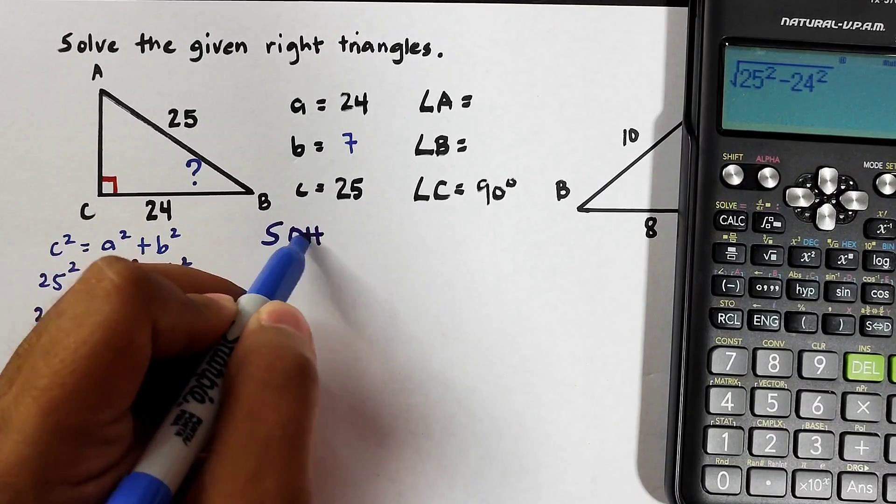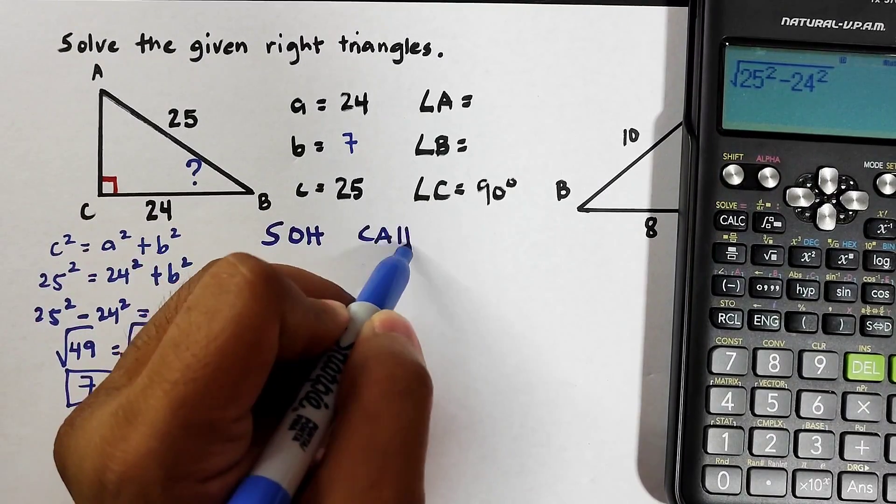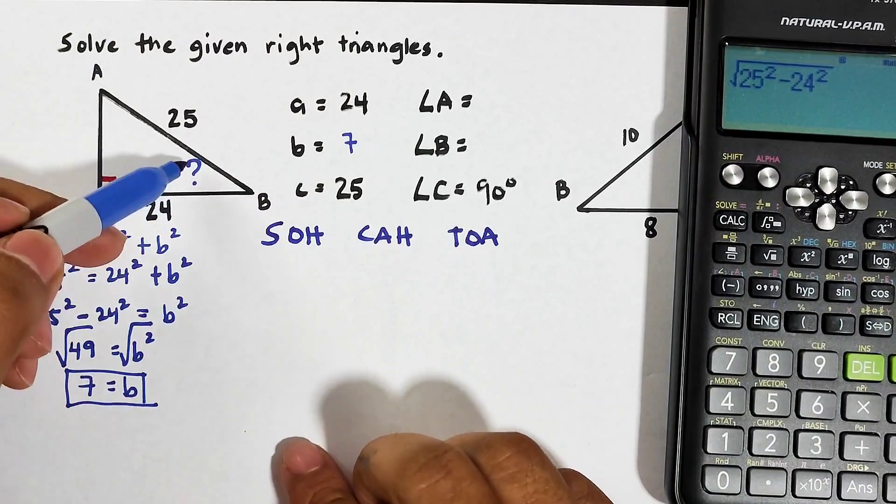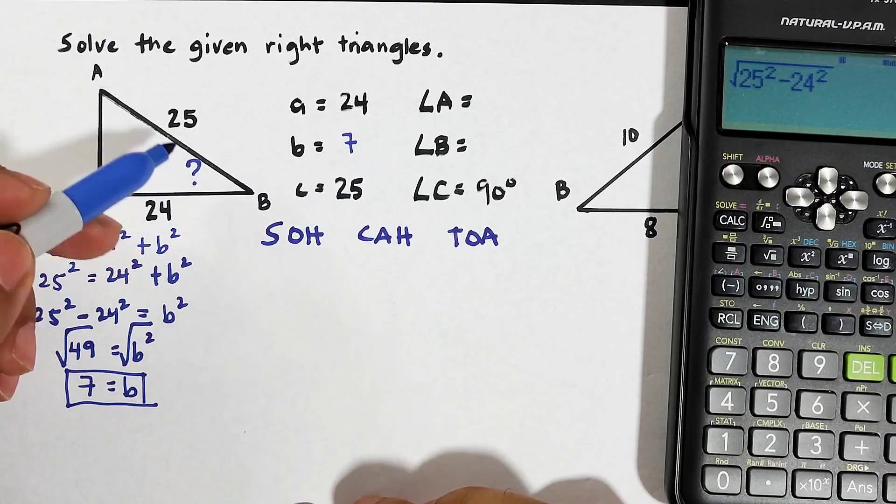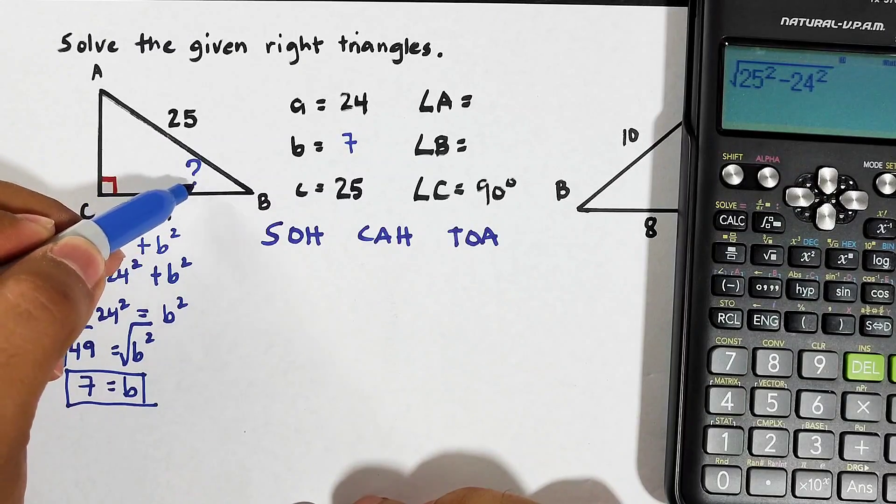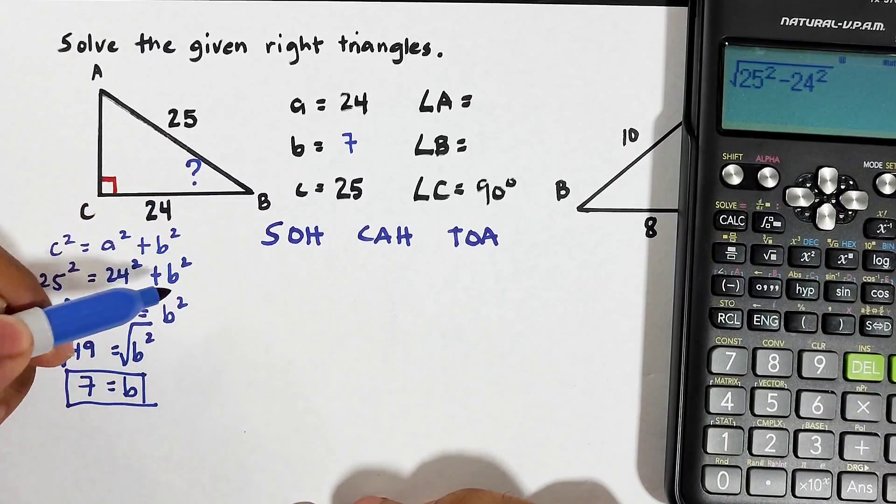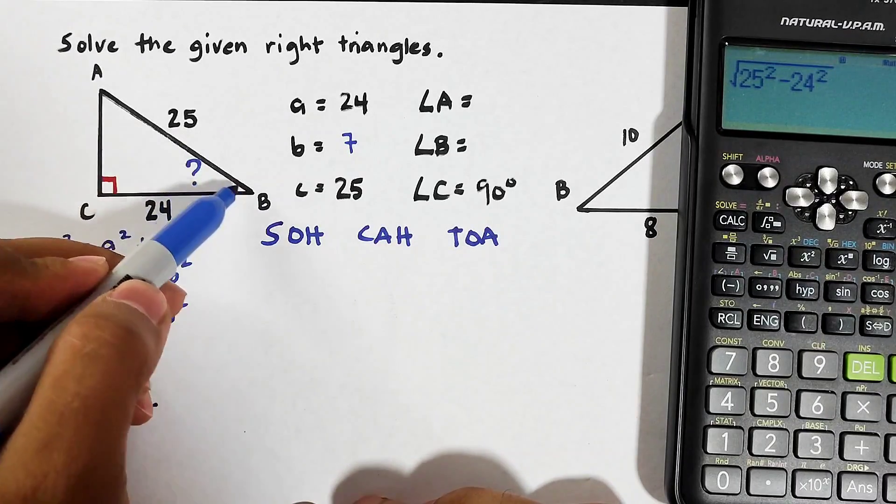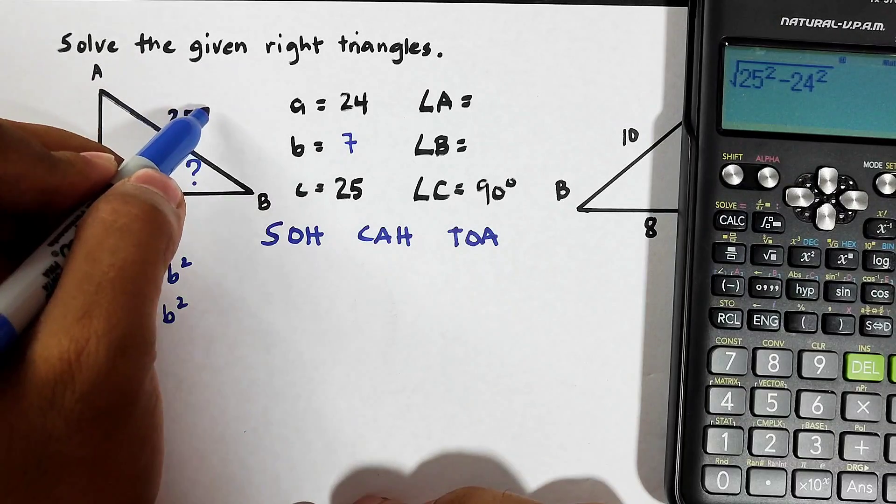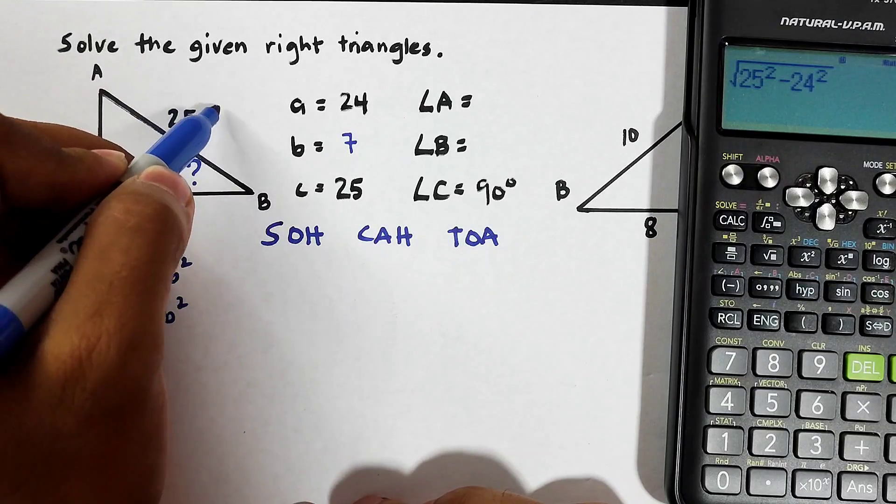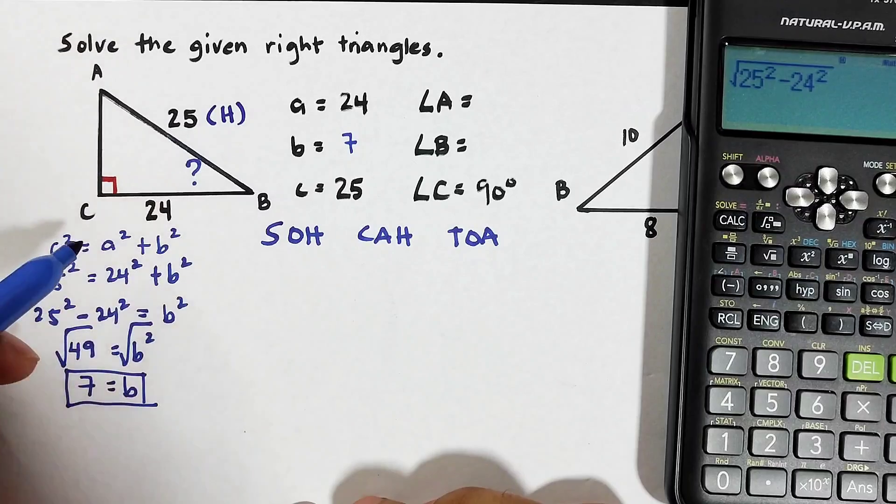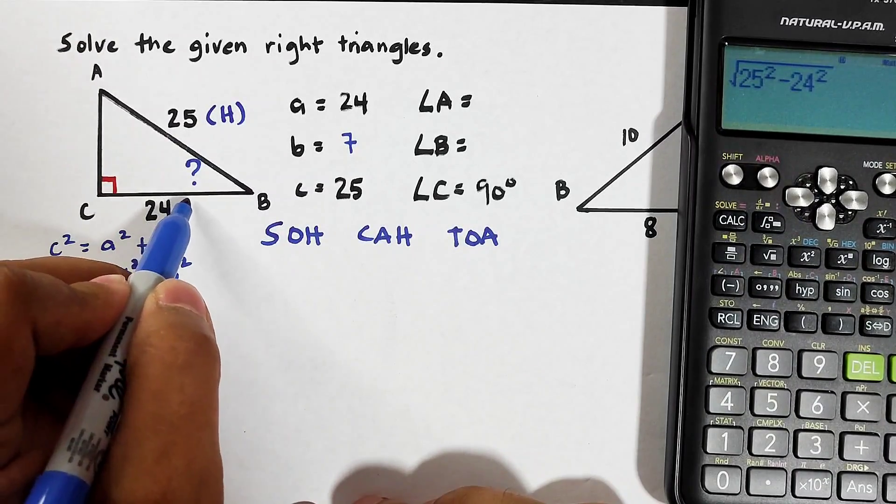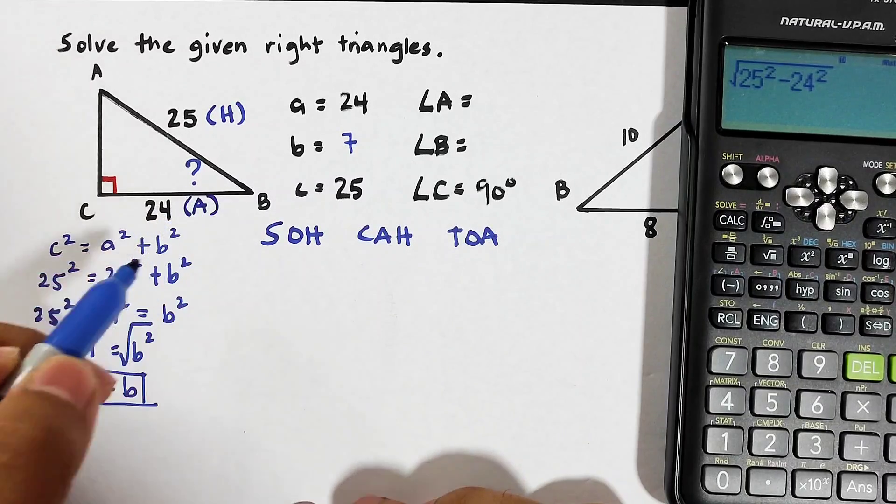Now let's focus on this angle. With respect to your angle or to your acute angle B, what are the sides? This side is your hypotenuse and this side with respect again to your angle B, this is your adjacent side.